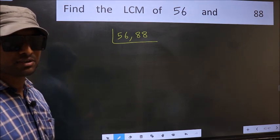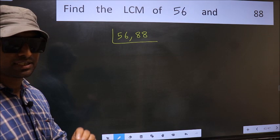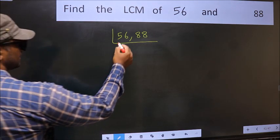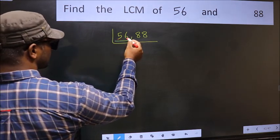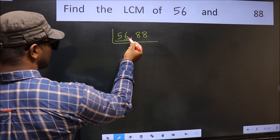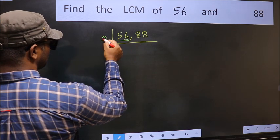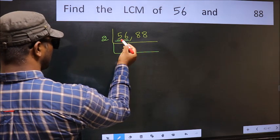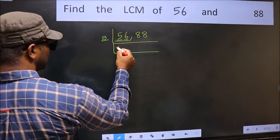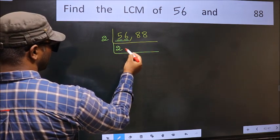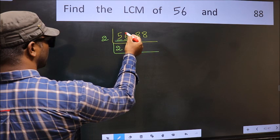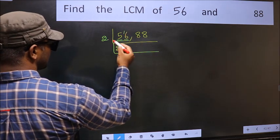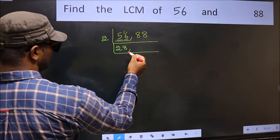Now focus on the first number, which is 56. Last digit is 6 — E1 — so take 2. First number is 5; a number close to 5 in the 2 table is 2 times 2 is 4. 5 minus 4 is 1, carried forward: 16. When do we get 16 in the 2 table? 2 times 8 is 16.